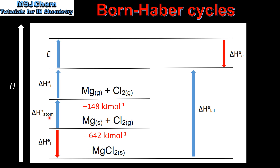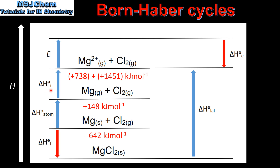The next step is the standard enthalpy change of atomization, which is the enthalpy change when one mole of gaseous atoms is formed from an element in its standard state. In this step the one mole of solid magnesium becomes one mole of gaseous magnesium atoms.